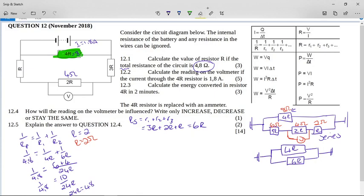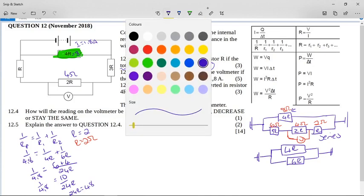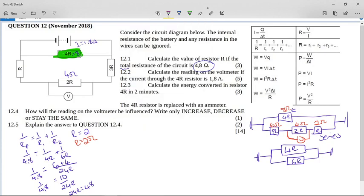Let me rub this out and start in this little space over here. Let's change color pen as well. So if we look at 12.2, we can work out, you can see it's five marks, it's not going to be one calculation. We can say V equals IR. We know the current is 1.8. We know the resistance is 4 times R, so that is 4 times 2. So my total volts in that resistor is going to be 1.8 times 8 gives you 14.4 volts.